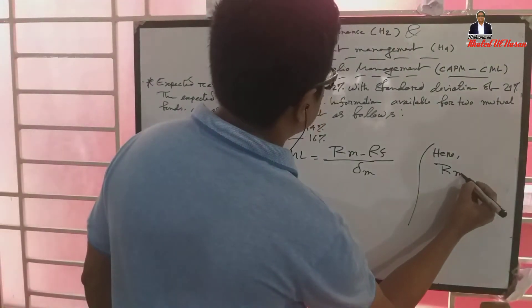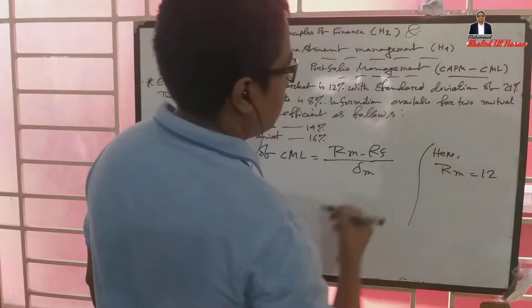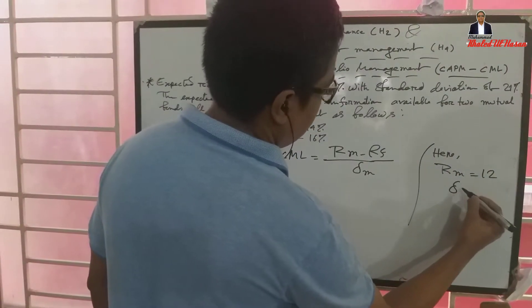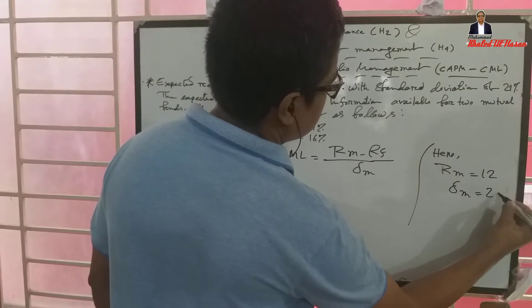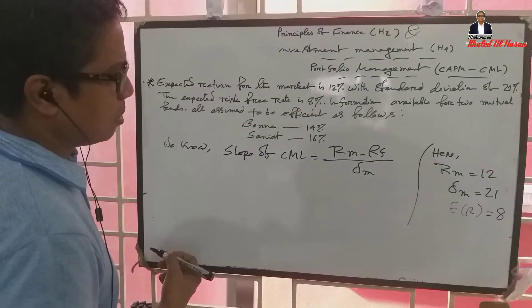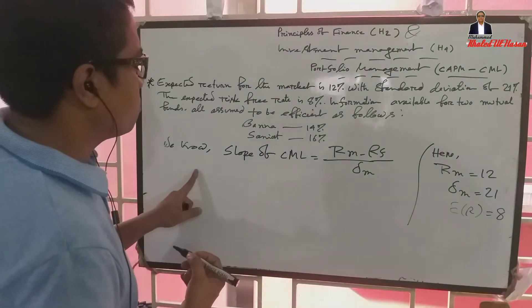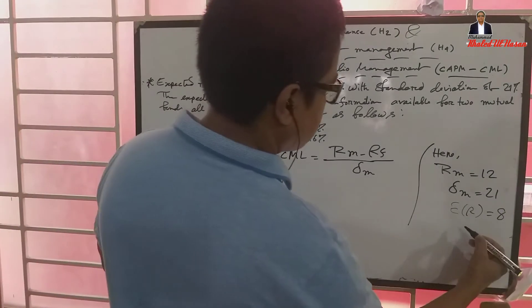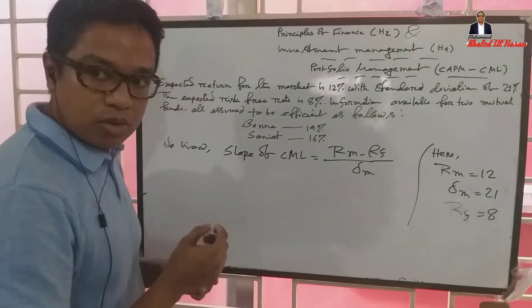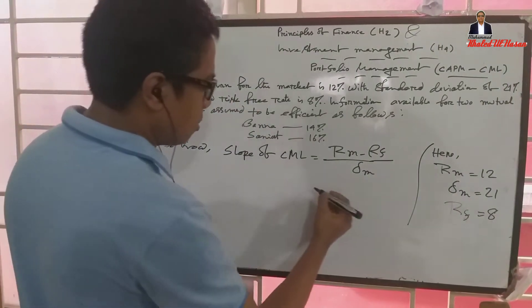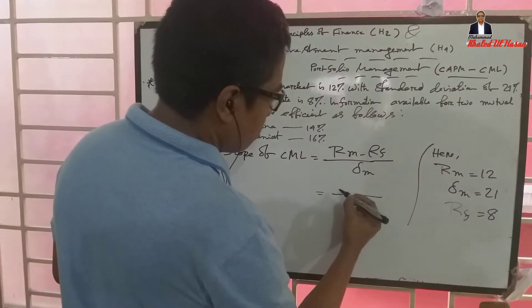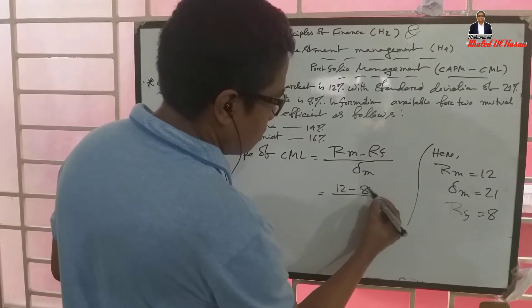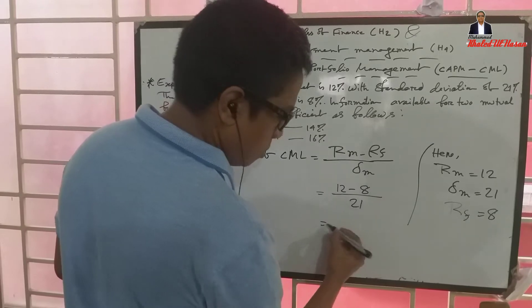The slope of CML is Rm minus Rf divided by Sigma M. Rm is 12, Rf is 8, and Sigma M is 21. Let's calculate the return on the market.